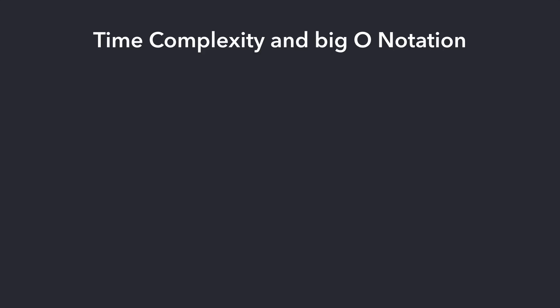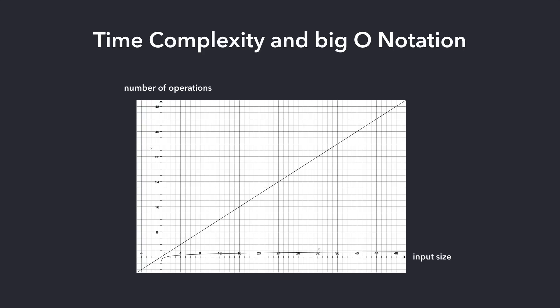Time complexity is the computational complexity that describes the amount of time it takes to run an algorithm. We use Big O notation to classify algorithms according to how their running time or space requirements grow as the input size grows. I have created a little graph here that illustrates the input size and the number of operations required. The linear graph is showing our linear search with a Big O of N — a proportional growth where each element added to our array results in an additional operation.